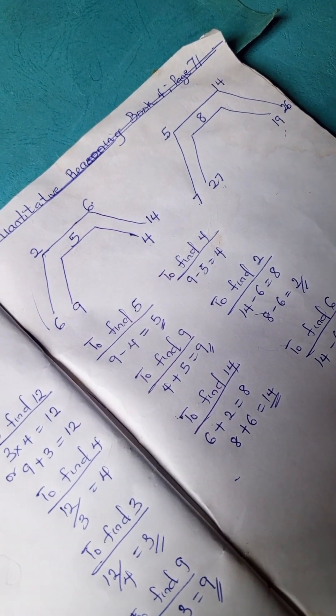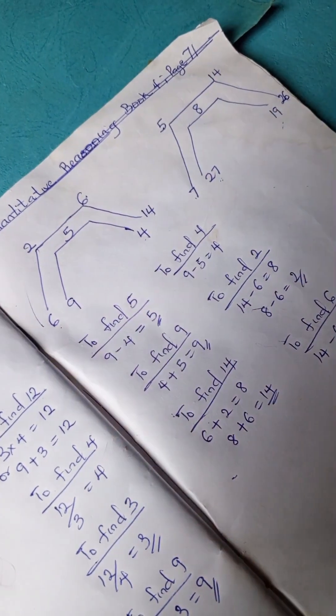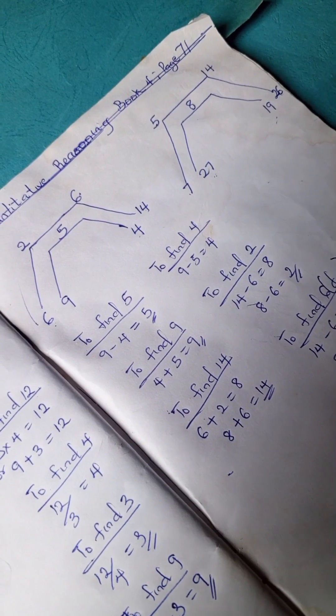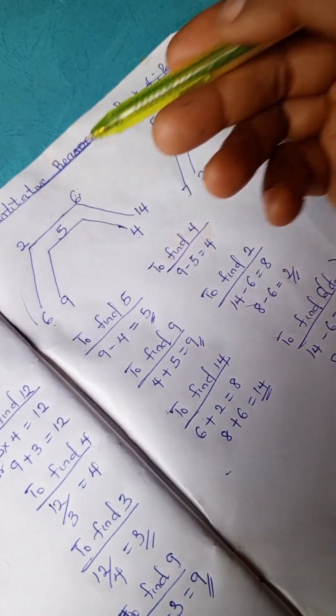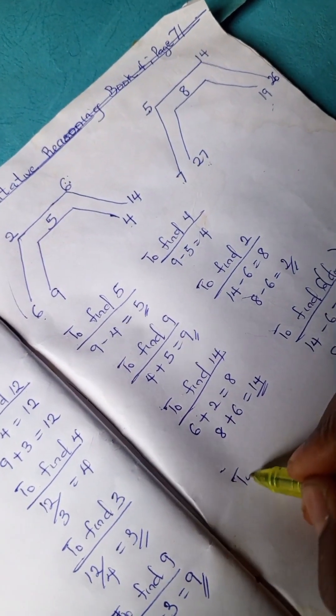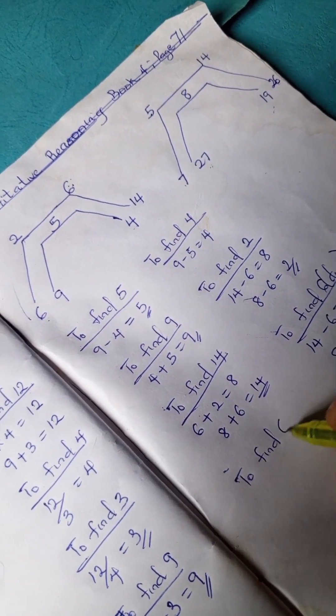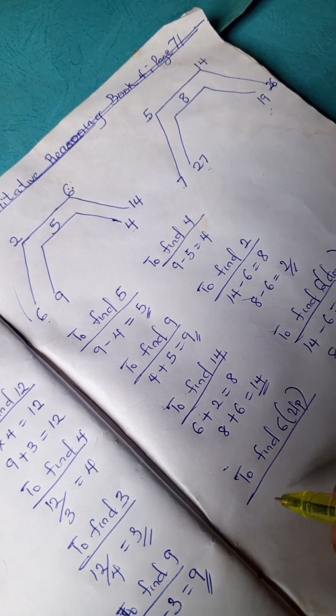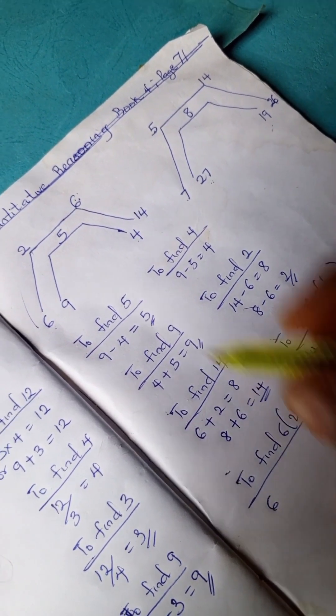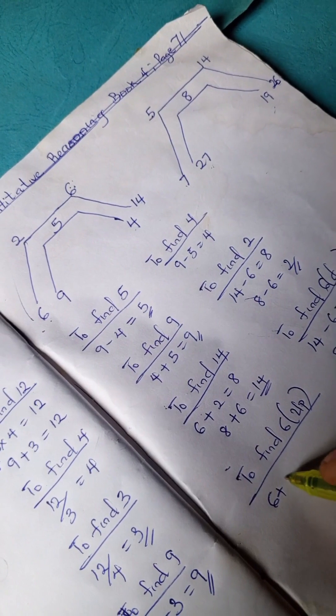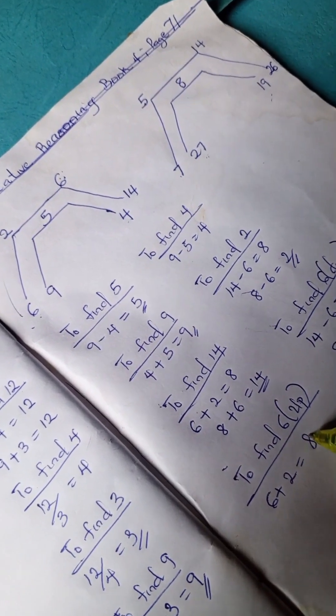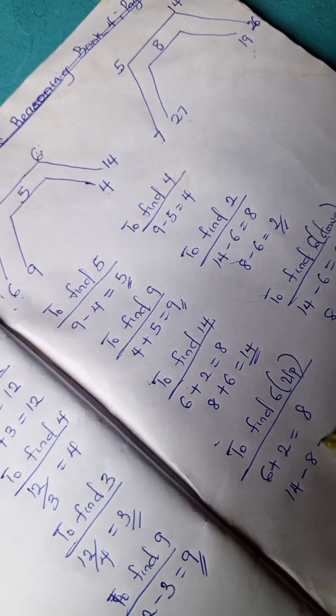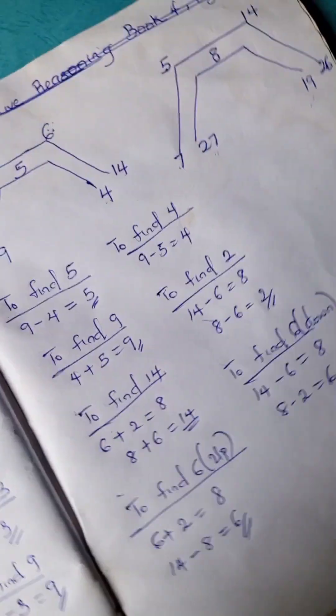Let's indicate it down. Let's try to get this 6. To find 6, 6 plus 2 equals 8, and 14 minus 8 is 6.